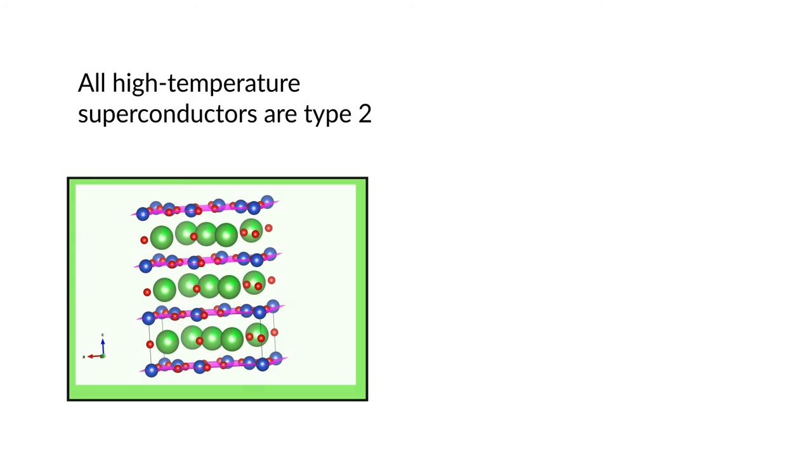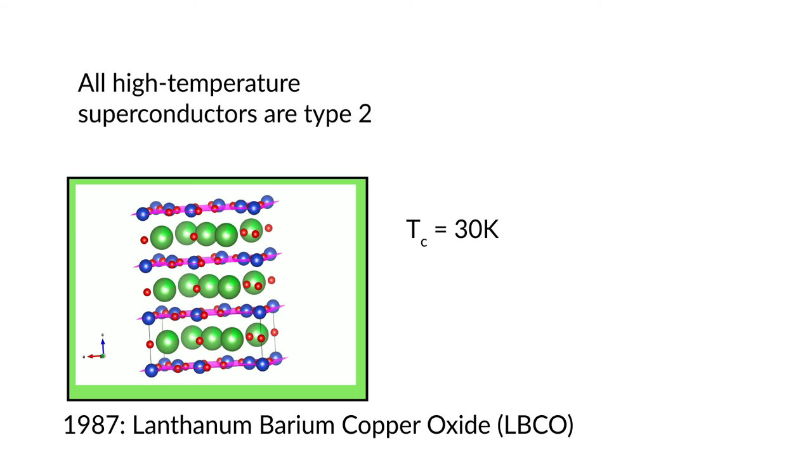All high temperature superconductors are classified as type 2. The first one was discovered in 1987, and this was lanthanum barium copper oxide, which had a critical temperature of 30 Kelvin. Soon, as we saw previously, superconductors with critical temperatures above 77 Kelvin were found.